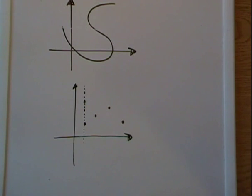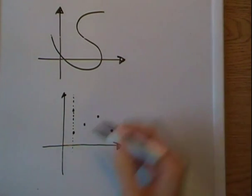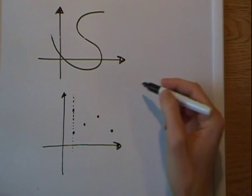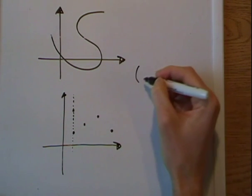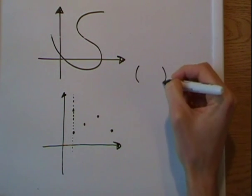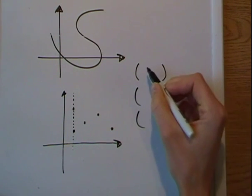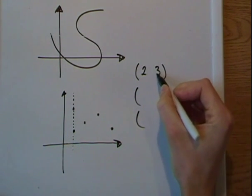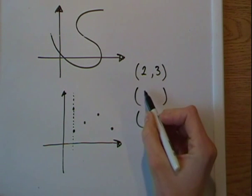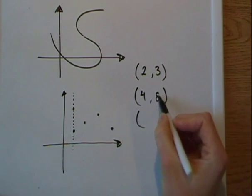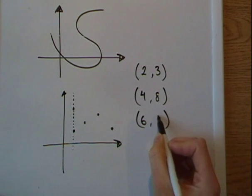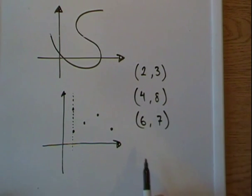So what to remember is that a set of points cannot have two... let's say you had three different points here. So you had 2, 3, 4, 8, 6, 7. I just randomly picked these numbers up.